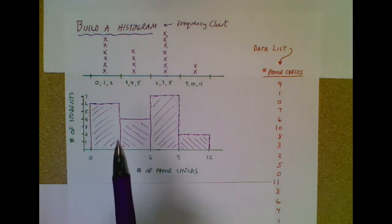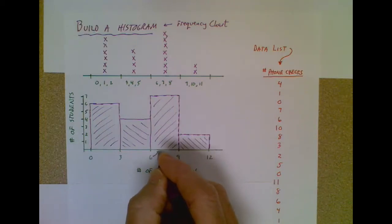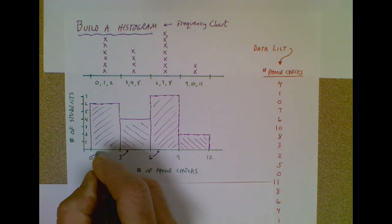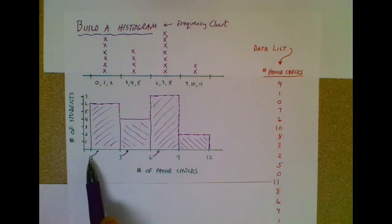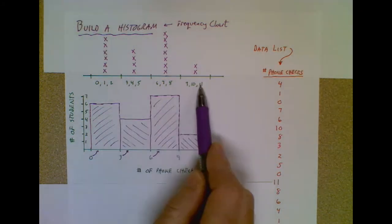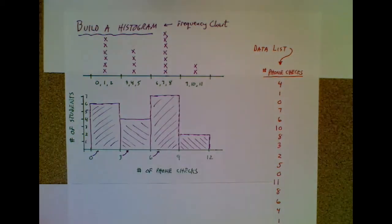So it just gets a little bit awkward because this six belongs in this category, just like this three belongs in this category, and this zero belongs in this category. So you will sometimes see a histogram labeled along this x-axis like this, but it probably makes more sense for people to label it like this. Just be prepared to see it like that.